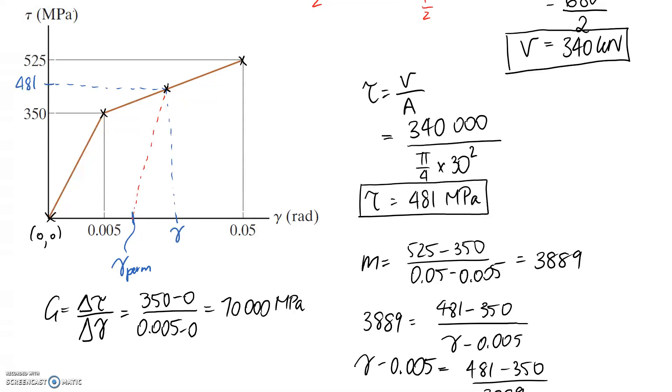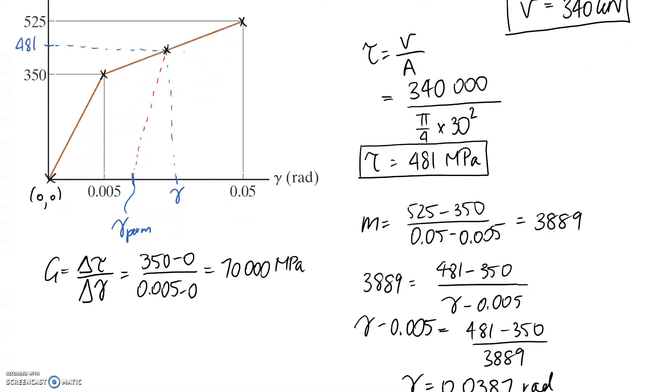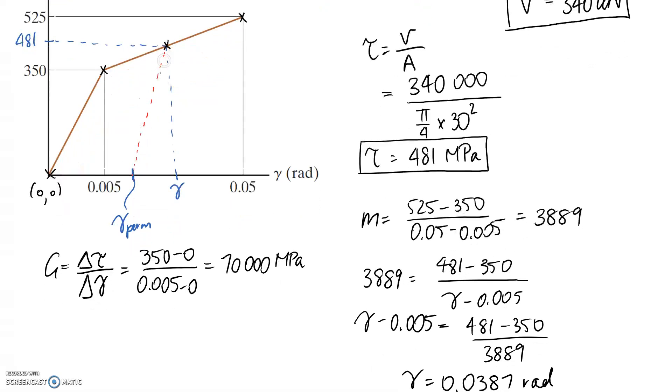So now we can reapply the equation with the gradient in it based on these points now. So we're going to look at the point down the bottom where we intersect the axis and the point up the top here that we just found, remembering that this one came out to be the 0.0387. So we're going to have 70,000, our gradient, is equal to the change in the stress between these points, which is 481 take 0, divided by the change in the strain, so it's going to be the difference in here, 0.0387 minus the permanent strain.